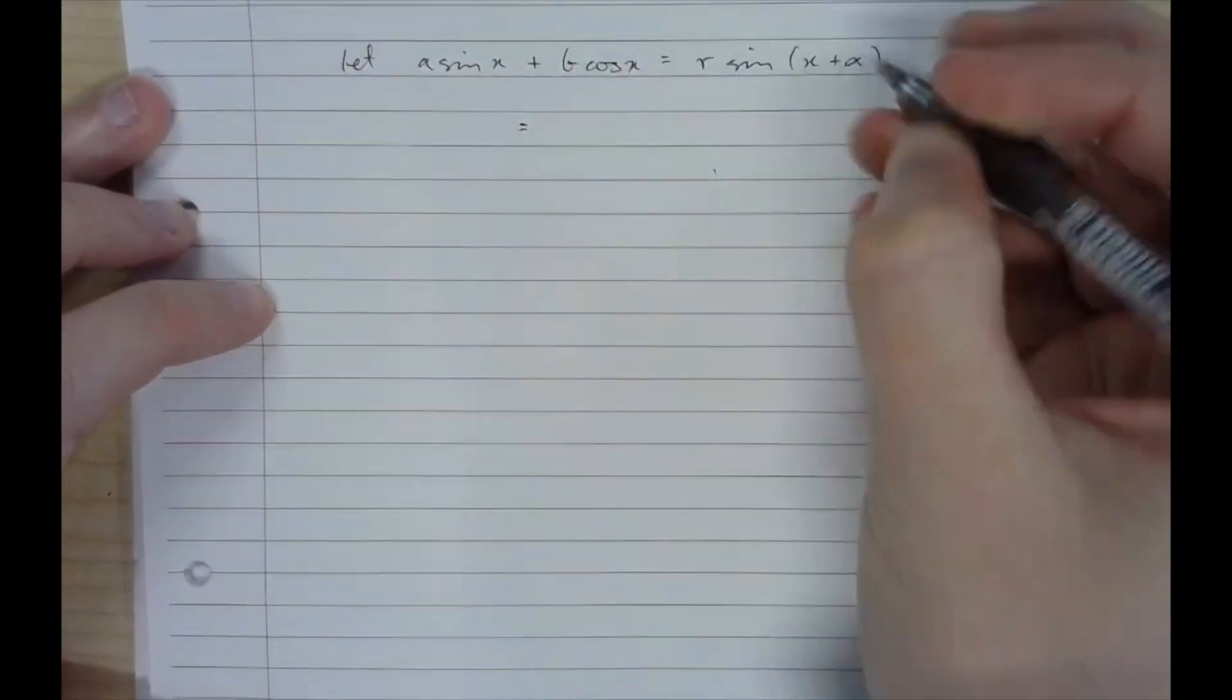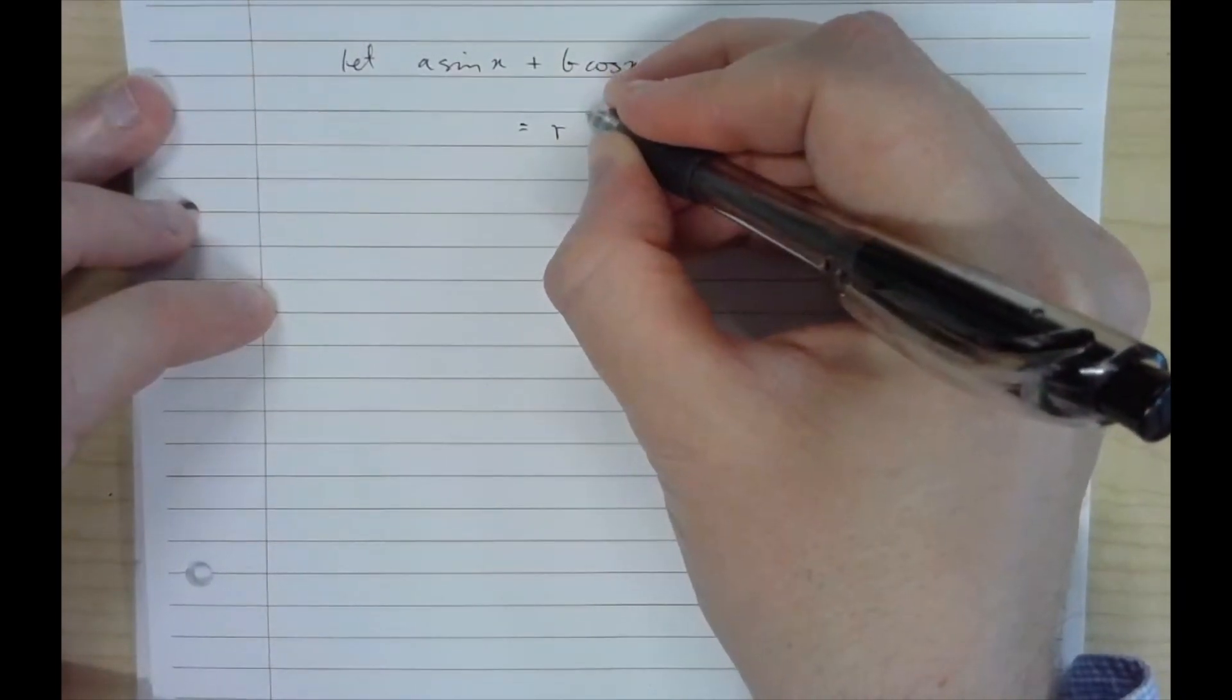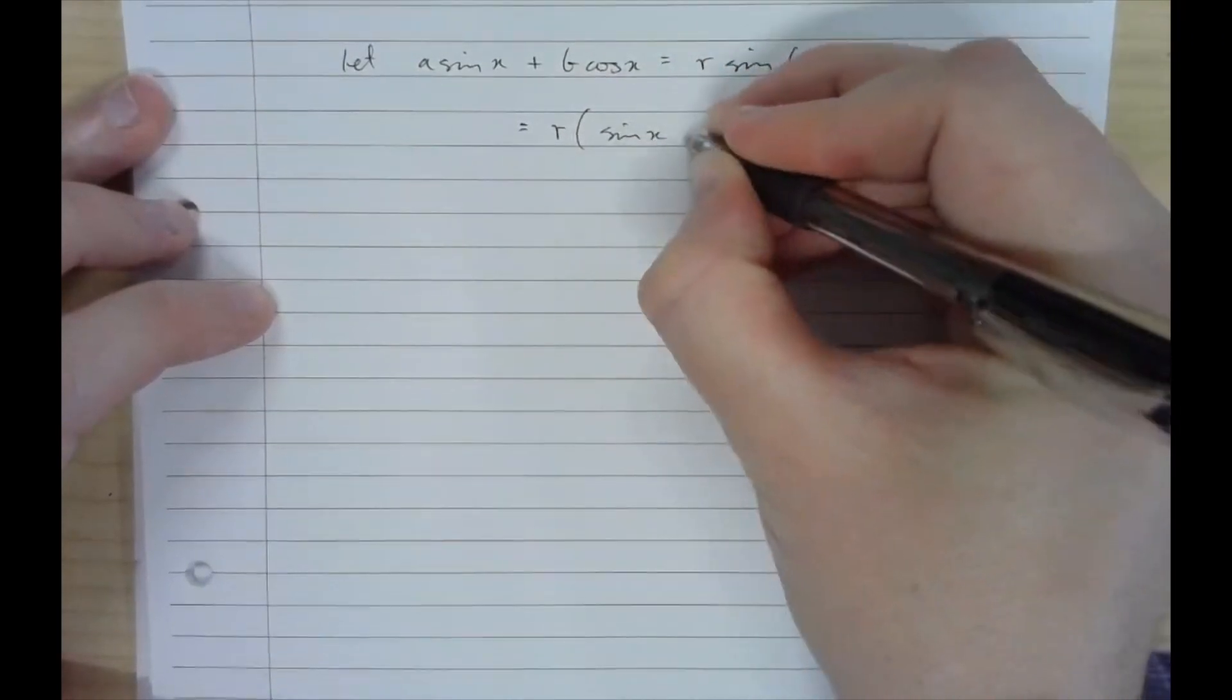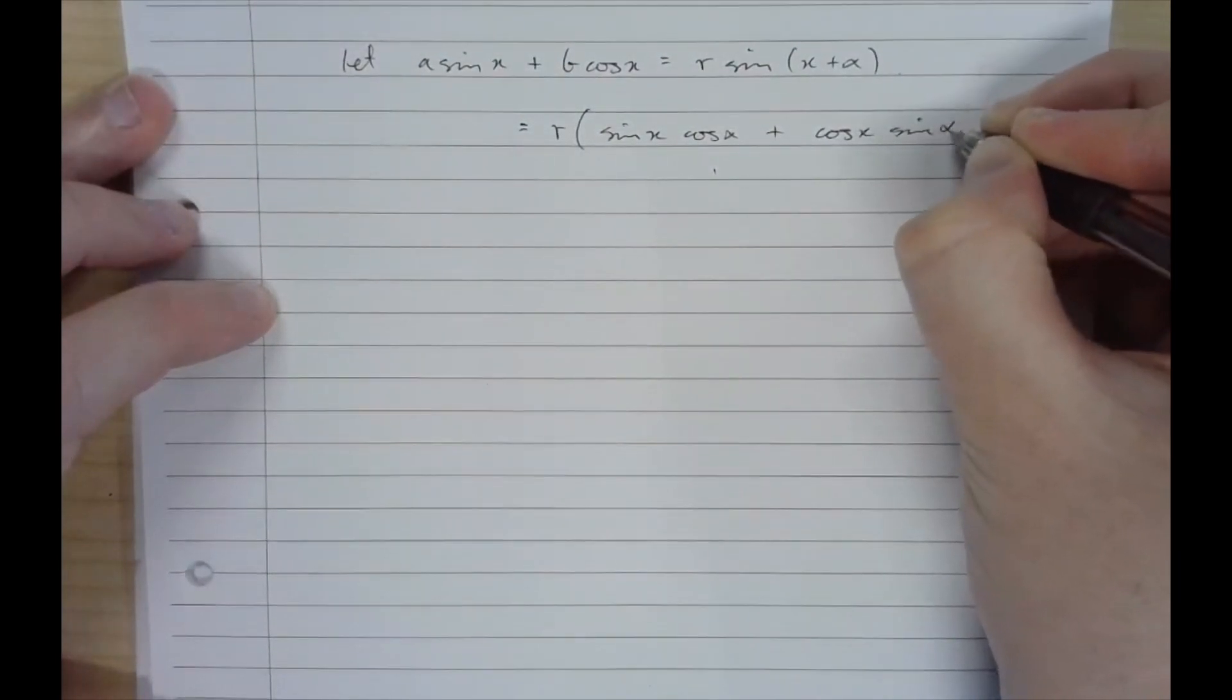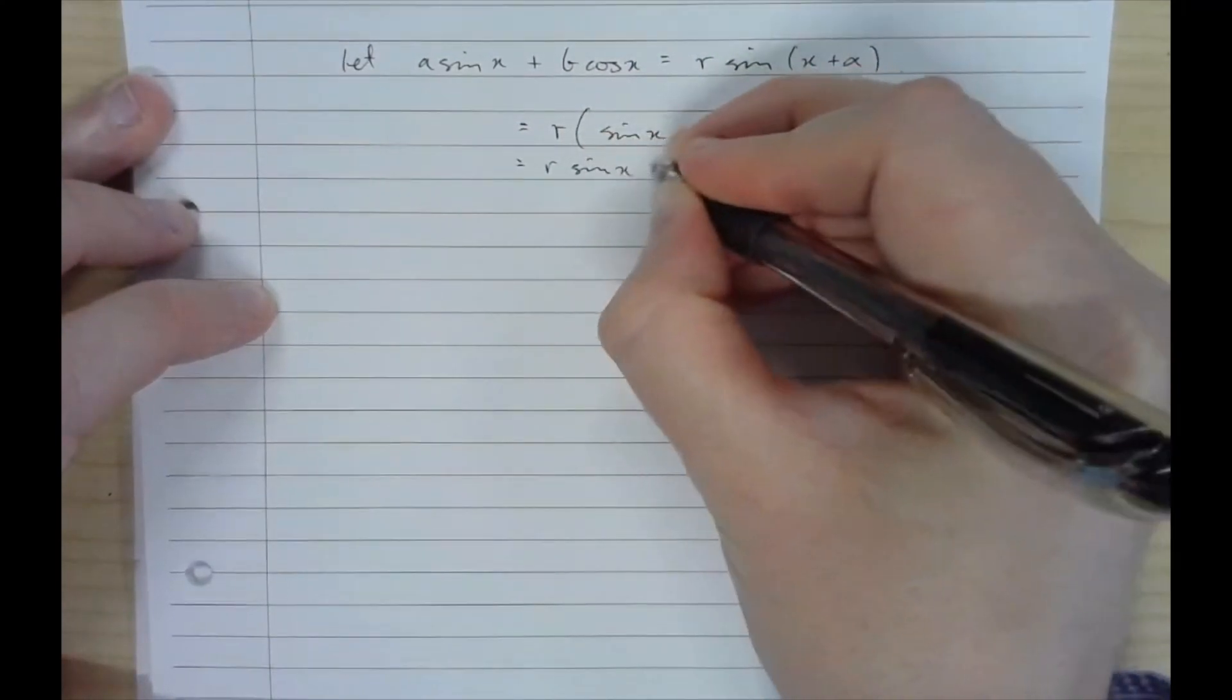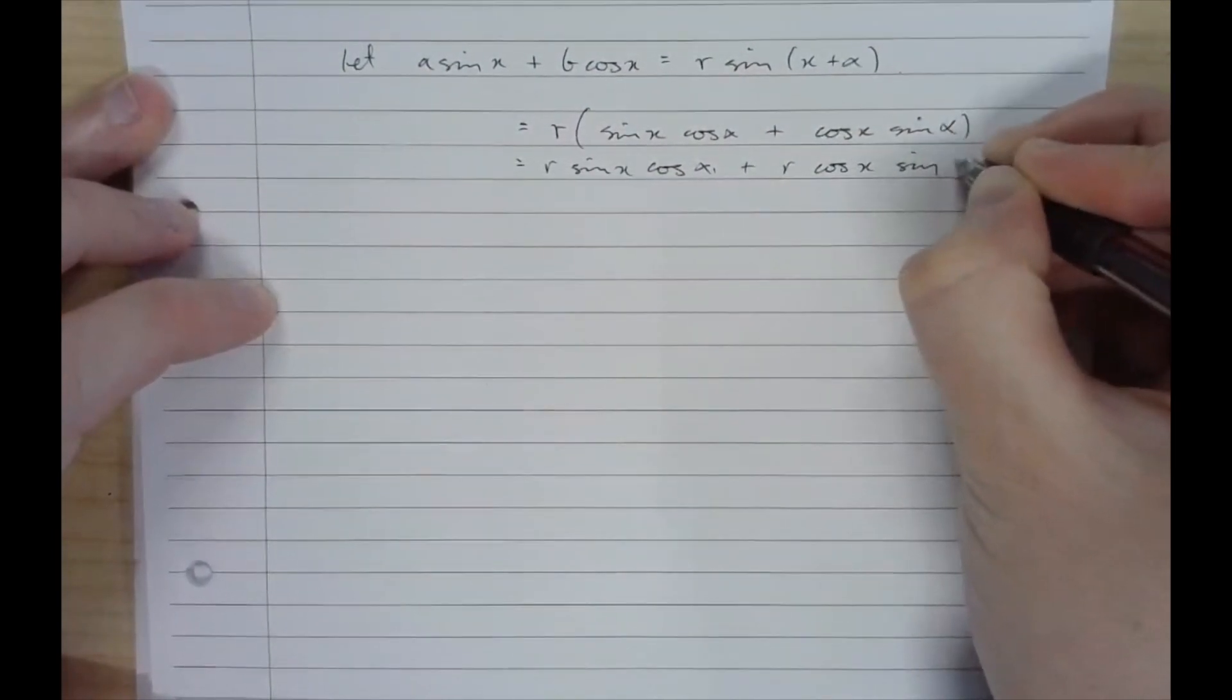On my right hand side I can use my sum of angles formula that I learnt in prelim. Take out R as my factor and then in brackets I will have sine x cos alpha plus cos x sine alpha. If I expand that, R sine x cos alpha plus R cos x sine alpha.